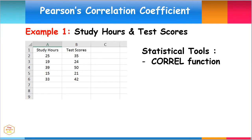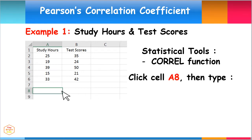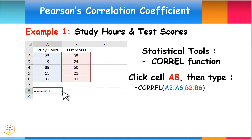Let's first use the built-in CORREL function to analyze our data. Click cell A8, then type equal sign, CORREL, parenthesis, A2, A6, comma, B2, B6, close parenthesis. Then hit Enter.